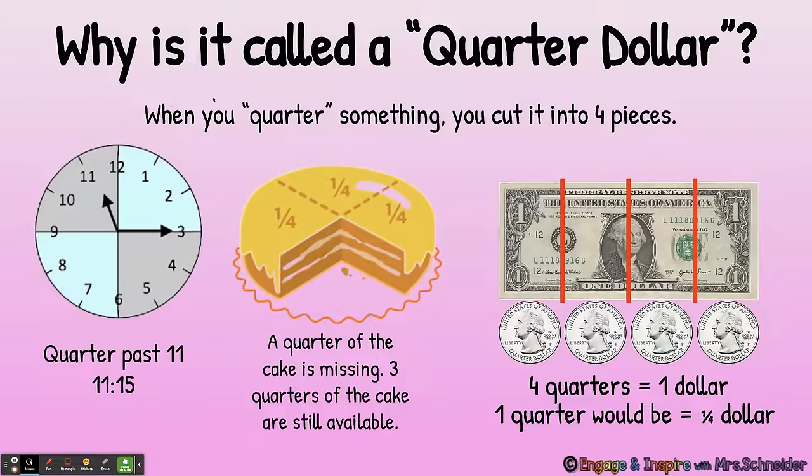Now comes the fun part. For this next activity we are going to be comparing coins. If you have real coins at home, now is a good time to get them out so you can see them and feel them. You need at least one penny, one nickel, one dime, and one quarter. Let's compare coins — look at the size of each coin: penny, nickel, dime, quarter.